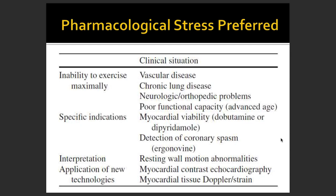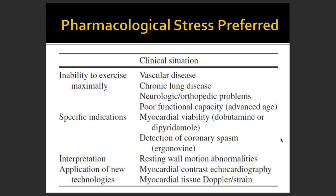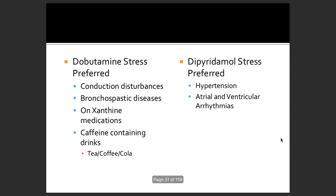Pharmacological stress is preferred when someone is not able to exercise, or for specific indications such as ruling out myocardial viability, detecting coronary spasm via ergonovine testing, or interpreting regional wall motion abnormality to identify which segment is affected. It also allows application of new technologies like tissue Doppler or contrast echo.